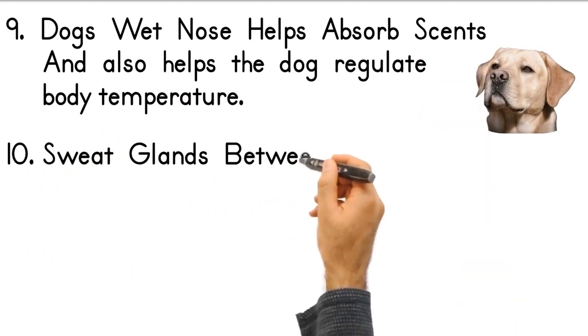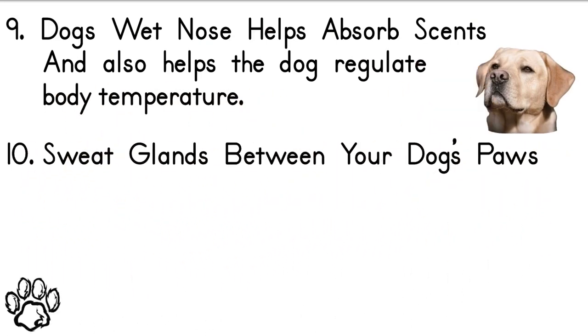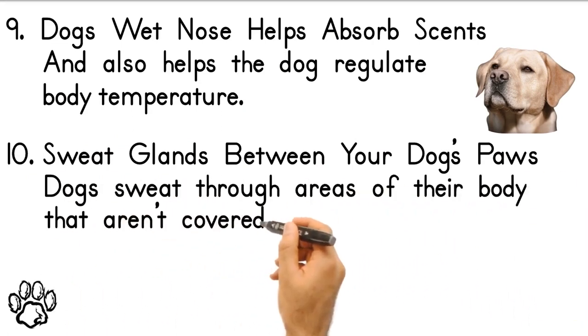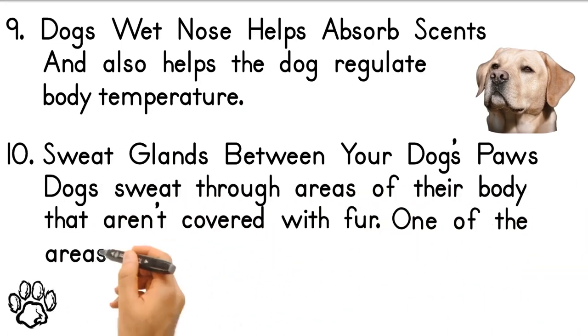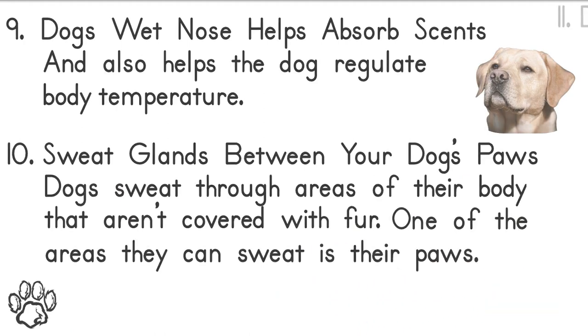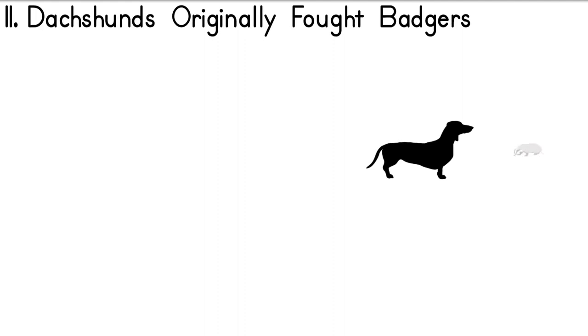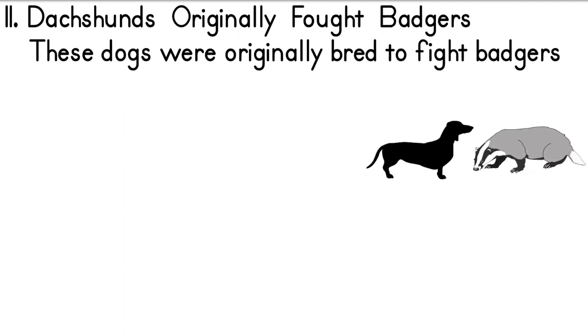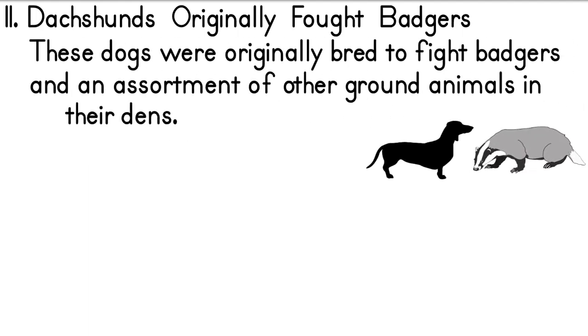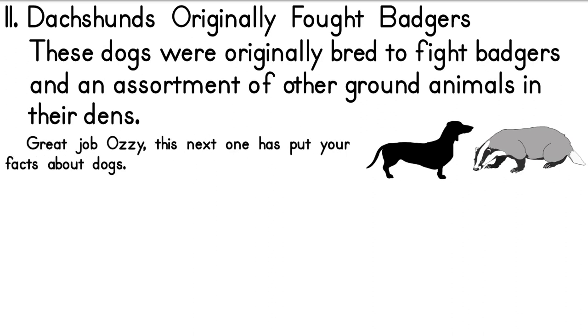10. Sweat Glands Between Your Dog's Paws. Dogs sweat through areas of their body that aren't covered with fur. One of the areas they can sweat is their paws. 11. Dachshunds Originally Fought Badgers. These dogs were originally bred to fight badgers and an assortment of other ground animals in their dens. Great Job Ozzy. This next one has put your dog on the facts about dogs.